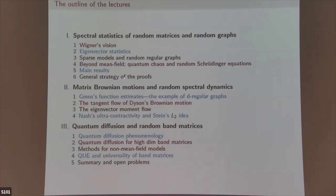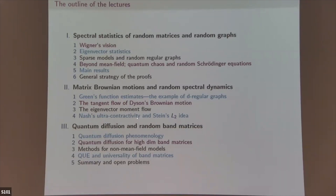The second talk will mostly concentrate on dynamical ideas, Dyson's Brownian motion, and random spectral dynamics. The first thing to be done is green function estimates. Then we'll talk about the tangent flow of Dyson's Brownian motion, the eigenvector moment flow — where we use Nash's ideas — and finally quantum diffusion of random band matrices.